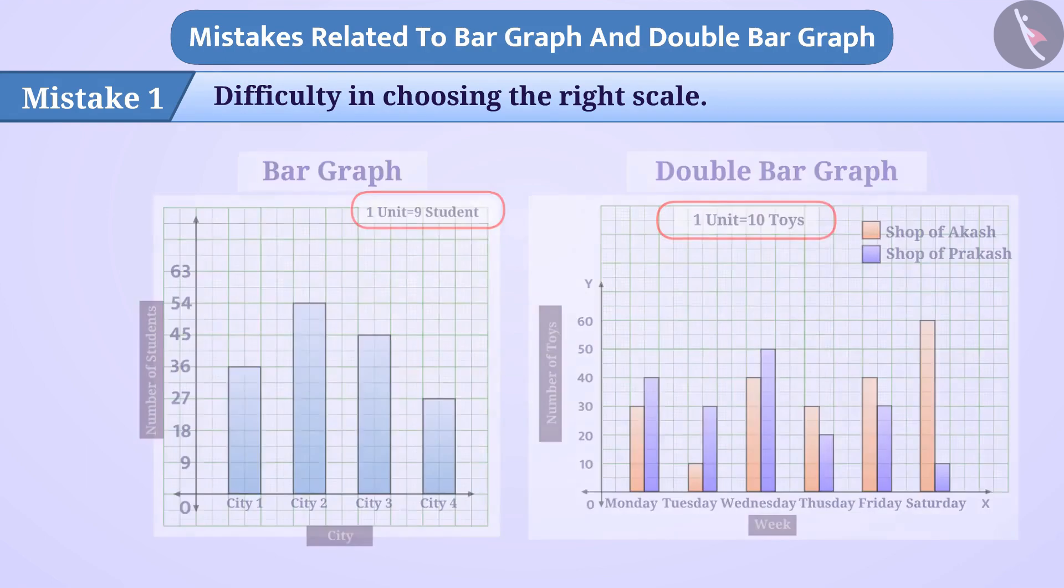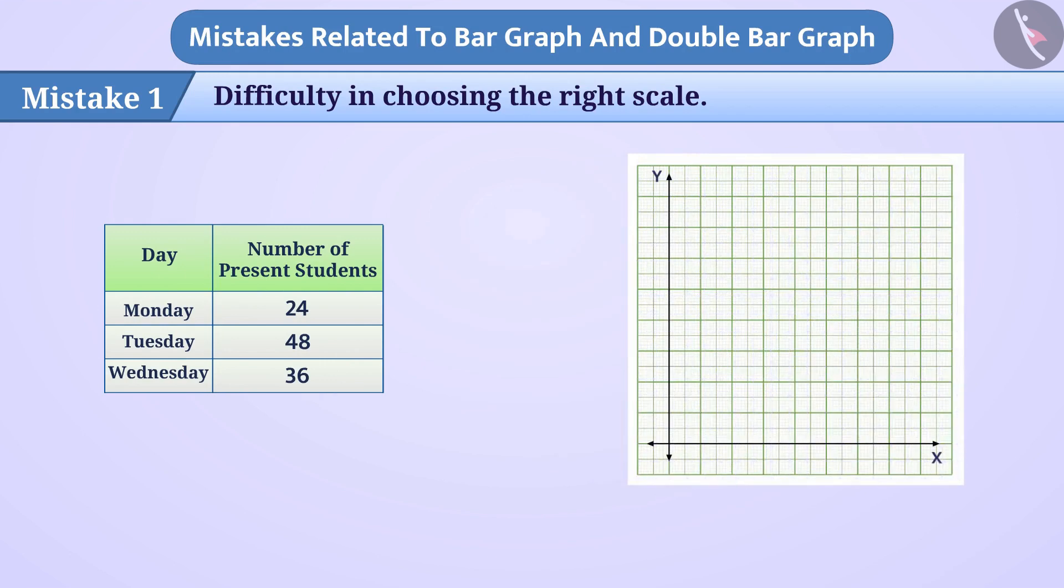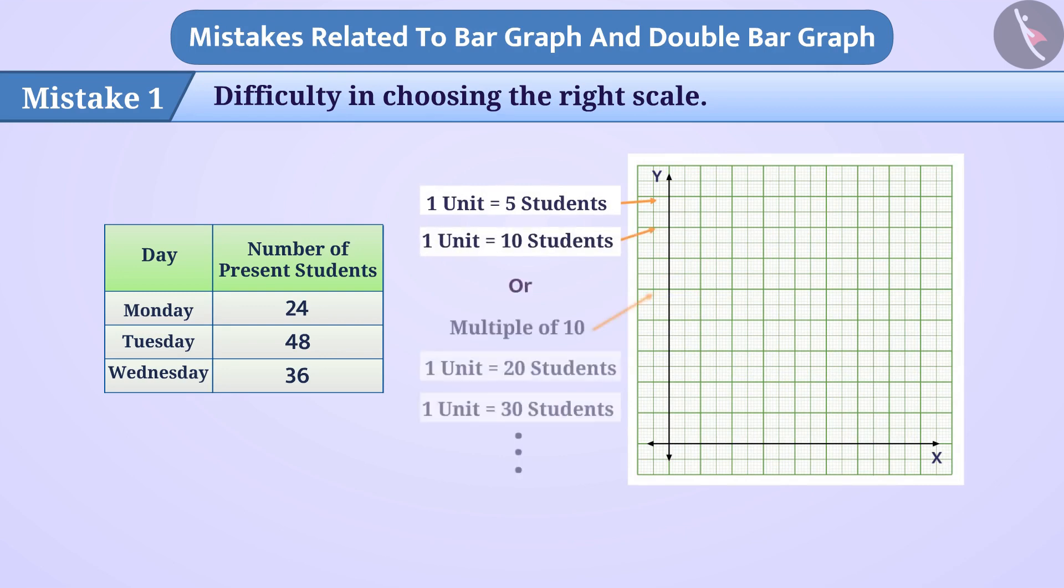Like here the number of students present in the class on Monday, Tuesday and Wednesday are shown. Children often think that it becomes easier to draw a bar graph if the scale is considered as multiple of 5, 10 and multiple of 10. But this is a misconception.